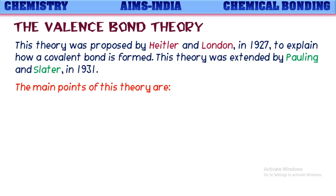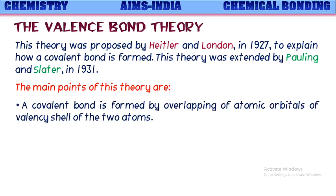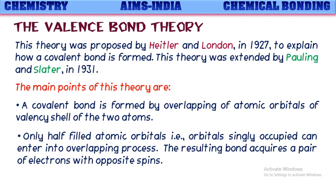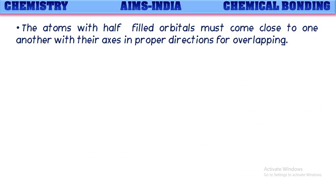The main postulates of this theory are: a covalent bond is formed by overlapping of atomic orbitals of the valency shell of the two atoms. Only half-filled atomic orbitals — that is, orbitals singly occupied — can enter into the overlapping process. The resulting bond acquires a pair of electrons with opposite spins.